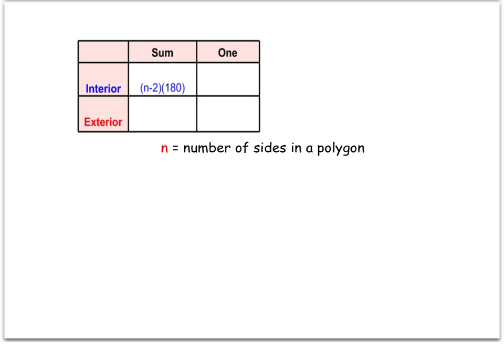That will help us out as we go forward, because if we get a 23-sided figure, for example, we don't want to draw it and separate it into triangles. We can just plug it into this formula to find out the sum of the interior angles.